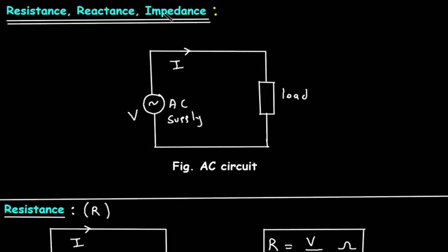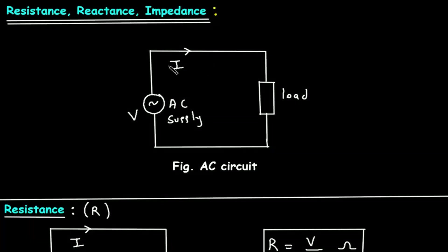Resistance, Reactance and Impedance. This is an AC circuit with AC supply having voltage V and current I. This circuit has a load.